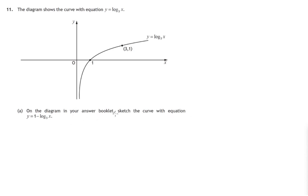When you turn to the answer booklet, you'll see exactly the same picture. I'm going to answer part A on this diagram. Let's do it in two stages. We're shown the graph y equals log to the base 3 of x. Let's first look at the graph y equals negative log to the base 3 of x.